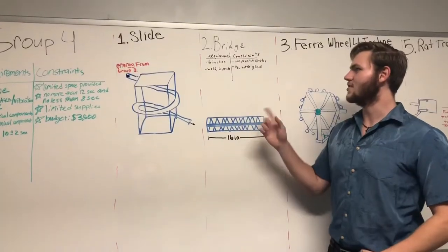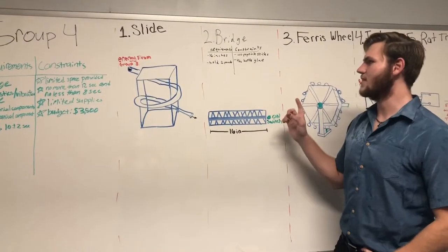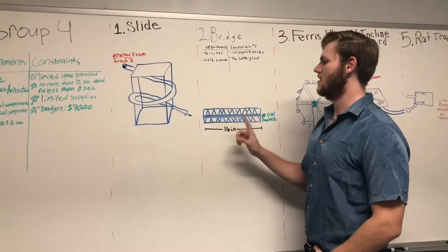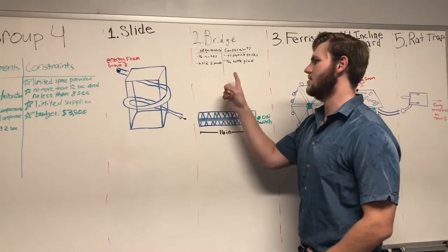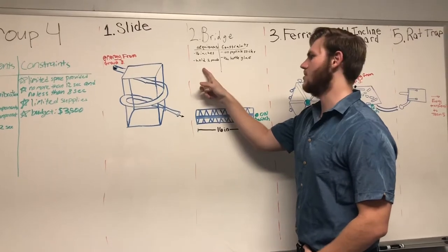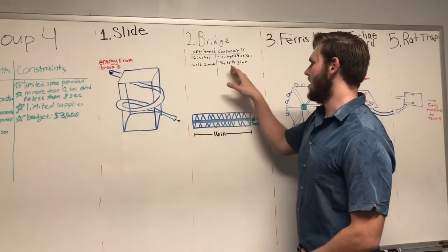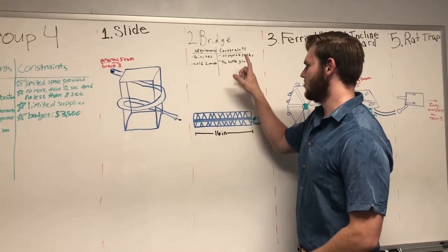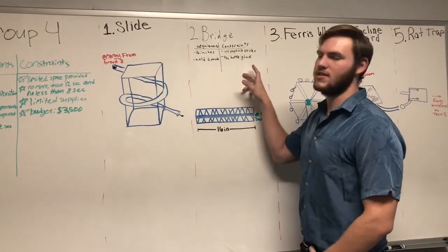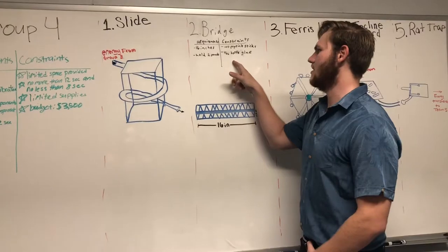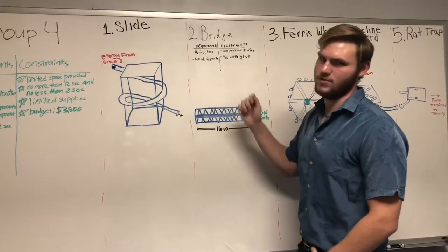Step 2 is our bridge step. For our bridge, we were required to have it at a length of at least 16 inches, and it had to be able to hold a minimum of 2 pounds. Our constraints for the bridge were that it had to be created with no more than 100 popsicle sticks and less than 4 ounces of Elmer's glue.